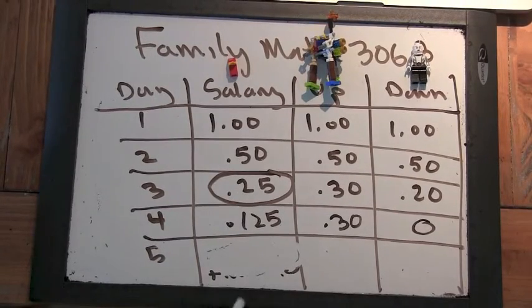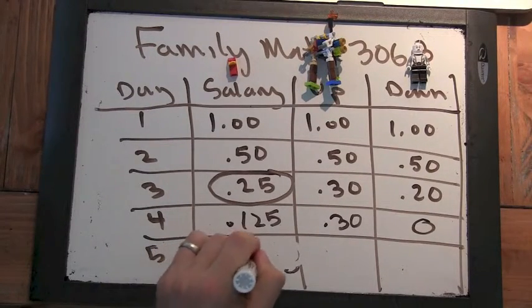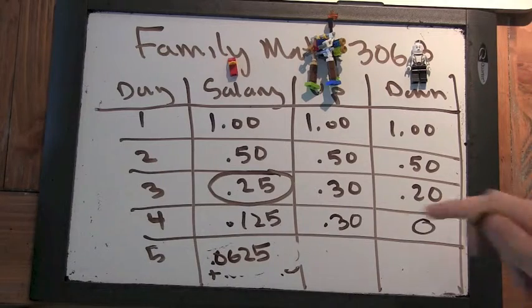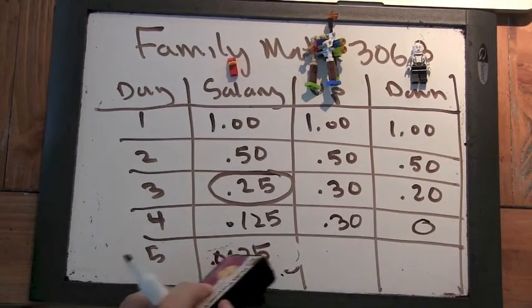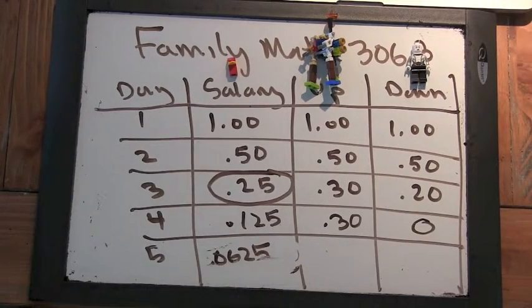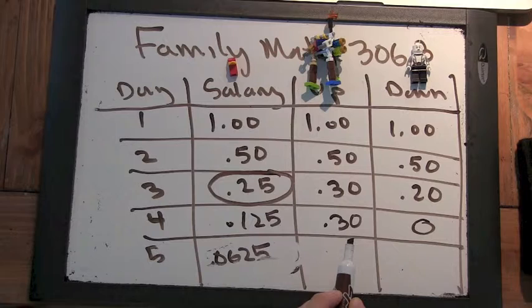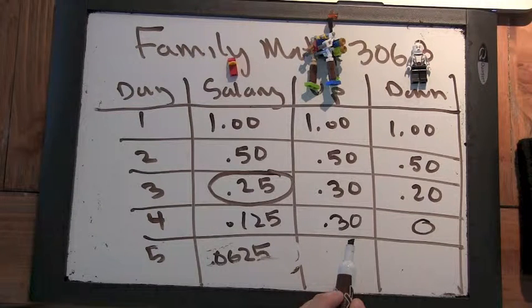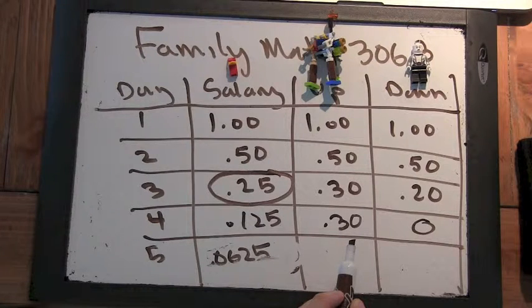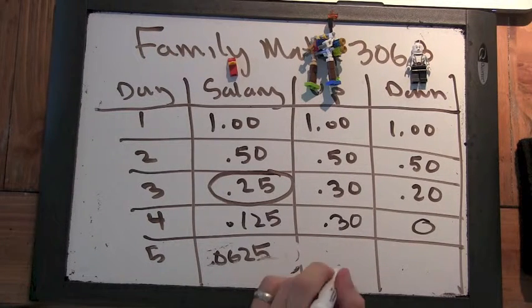We just found 0.0625 here. So what about in this column? What are we going to find? Well, it's going to be 2 and a half times 30, which is 60 plus 15. It's going to be 75 minus 30, which is 30 minus 30 is 45. So that's 45.